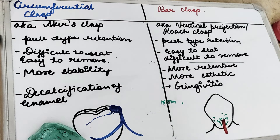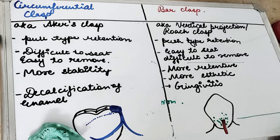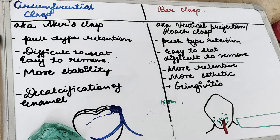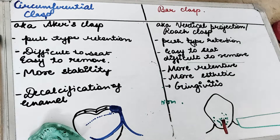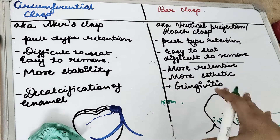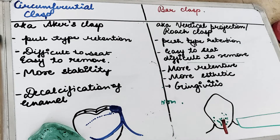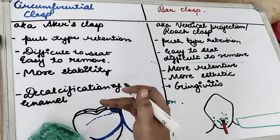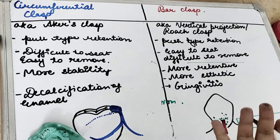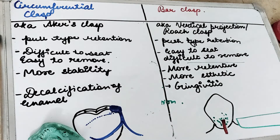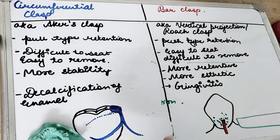A bar clasp can be used in distal extension cases where there is no tooth after the edentulous space — in a Kennedy Class I or Class II situation. In all areas where aesthetics are involved, especially in the anterior regions, it is better to give a bar clasp. A circumferential clasp can be given in the posterior region where stability of the prosthesis is more important.